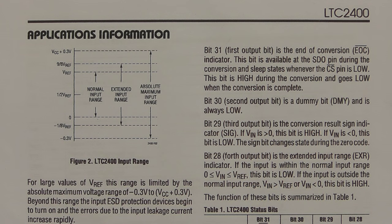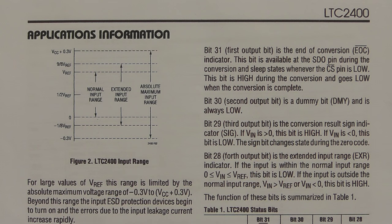On page 11 of the datasheet I want to look at the 32-bit data stream coming out of the IC. The first four bits of this data stream are status bits, the following 24 bits is actually the data that we want to capture, and then the last four bits are what they refer to as the sub least significant bits, which we can dispose of later.